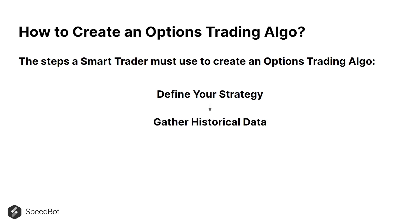Once the smart trader has got the strategy, then he or she needs to gather the historical data. The trader must define a time period on which the trading strategy needs to be tested and collect that historical data of the option contract to create an option trading algo.